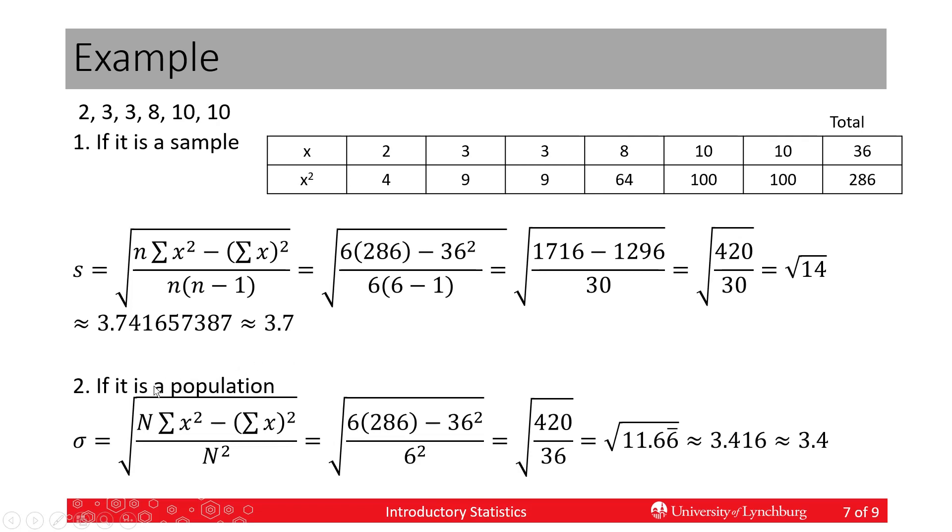If it were a population instead of a sample, we would use a different formula. Write down your formula and then plug in. N is 6, the sum of x squared is the same, the sum of x which is 36 squared is the same. What's different is on the bottom. Instead of 6 times 5, we have 6 times 6.